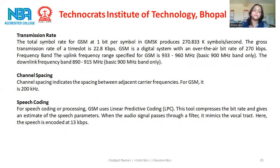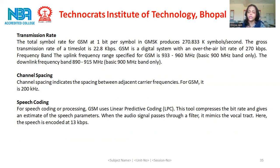The total symbol rate for GSM is 1 bit per symbol. In GMSK, it produces 270.833 kilo symbols per second. The gross transmission rate of a time slot is 22.8 kbps. GSM is a digital system with an over-the-air bit rate of 270 kbps. The uplink frequency range specified for GSM is 933 to 960 MHz for the basic 900 MHz band. The downlink frequency band is 890 to 950 MHz.